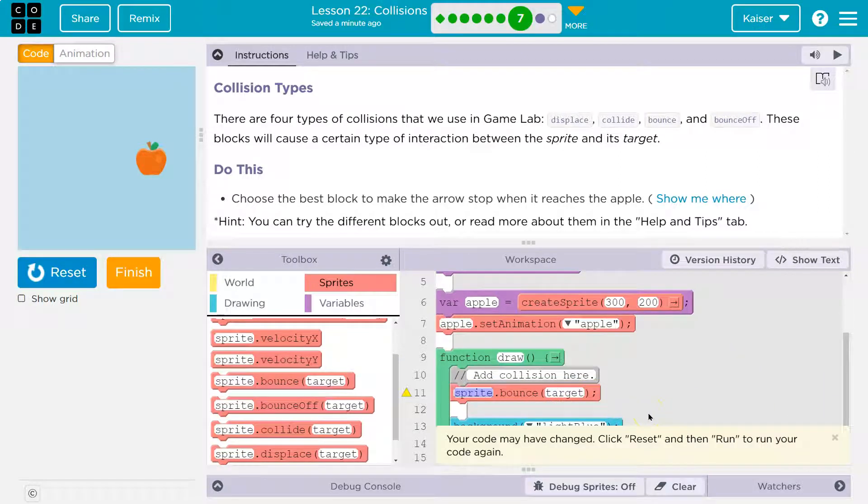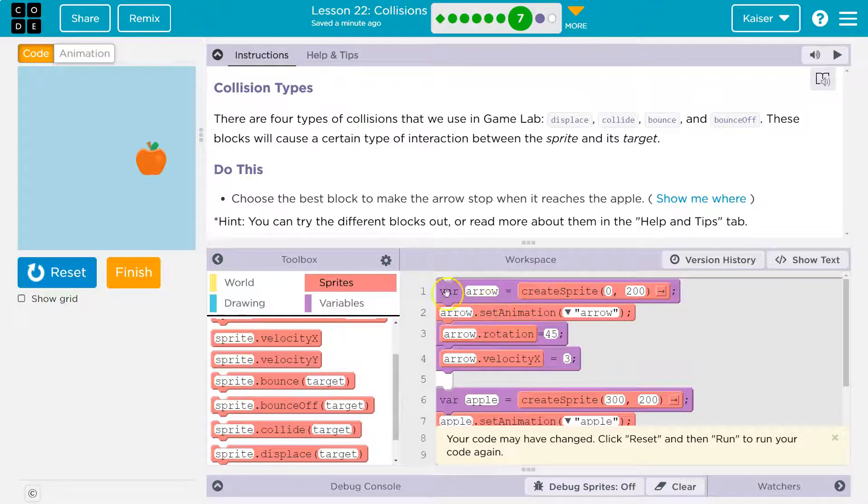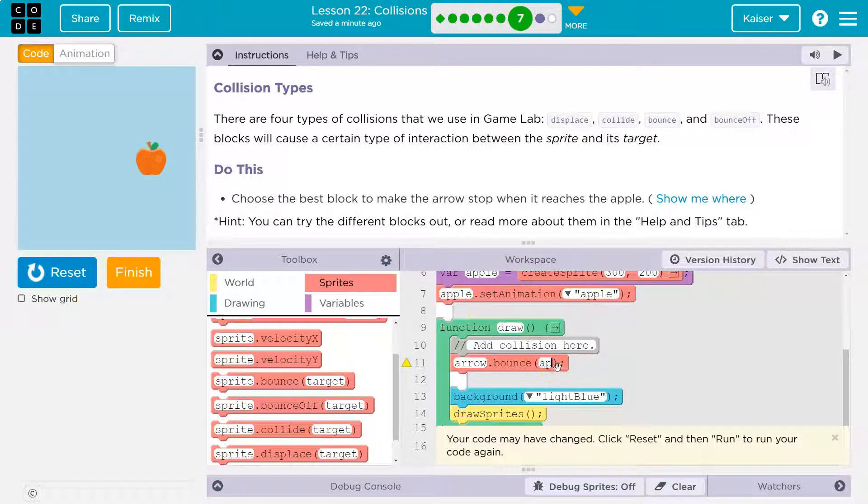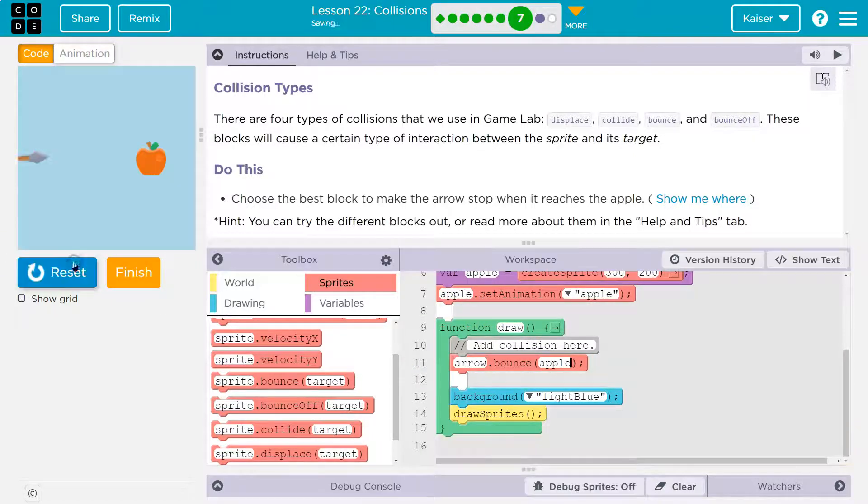I'm going to do arrow, because I believe that's the name. Yep, that's the name of our variable, and then apple. Let's test this one out. 30 times a second, it says 'am I touching? Am I touching?' Oh, I am - and bounce. The arrow bounce apple. So the apple goes off the screen. All right, so it wasn't that.